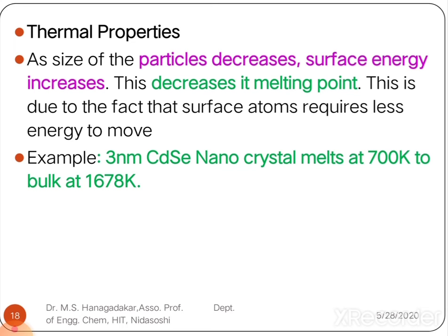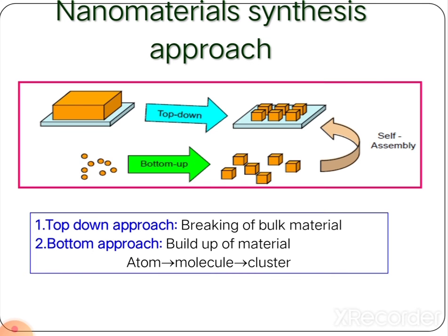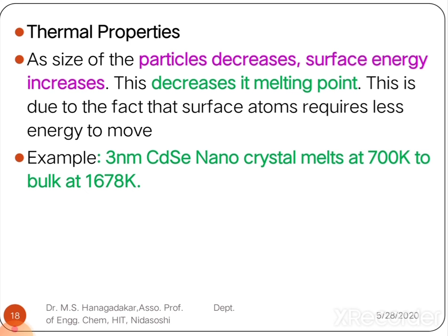As the size of nanoparticles decreases, surface energy increases, which decreases the melting point. This is due to the fact that surface atoms require low energy for movement. For example, 3 nanometer cadmium selenide nanoparticles melt at 700 Kelvin compared to the bulk melting point of 1678 Kelvin. This concludes the size-dependent properties of nanomaterials, which is very important from the examination perspective.